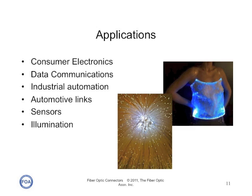Where is plastic optical fiber used? A lot of it is used in consumer electronics. It's also used in data communications, industrial automation, automotive links, sensors, and for illumination — like those Christmas trees that use fiber optics — but it can also be used for interesting illumination projects like clothing, as shown here.